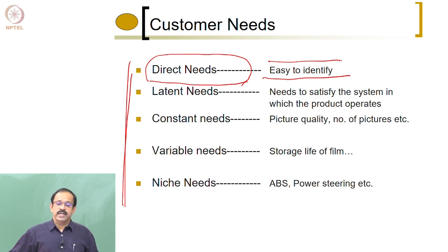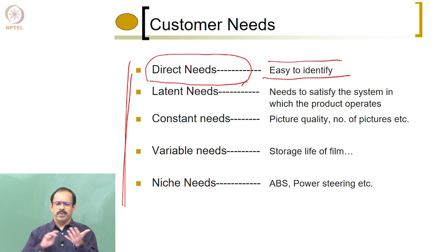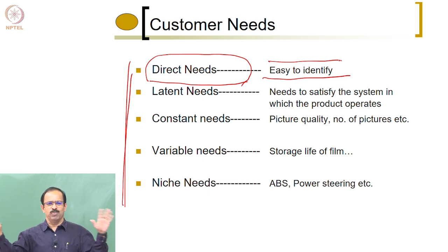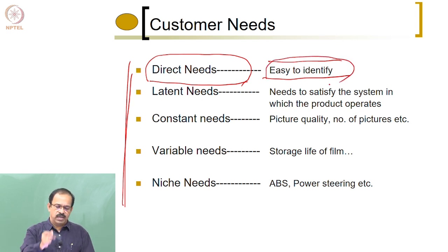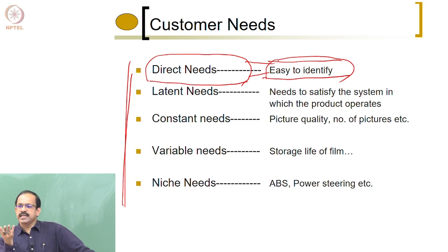If I ask you what are the direct needs of a laptop, all of you will be able to tell — it should be compact, easy to carry, have enough storage, enough speed of processing, a particular processor. You are very clear about what you want. All those needs are known as direct needs, which can be easily identified. But there are many needs in a product which you cannot directly identify, and they are known as the latent needs of a product.